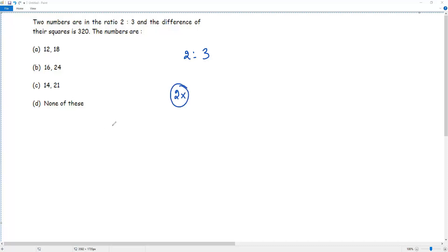And I multiply the second term of the ratio 3 by x, then I get 3x. So 3x is the second number.